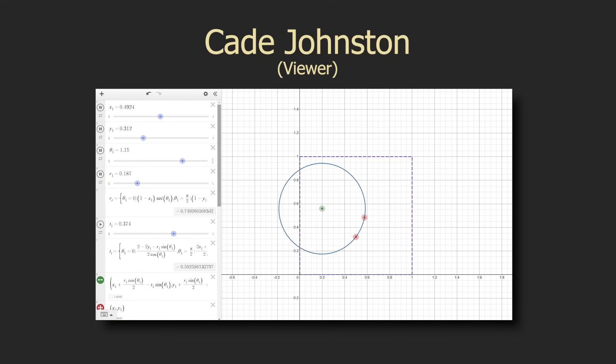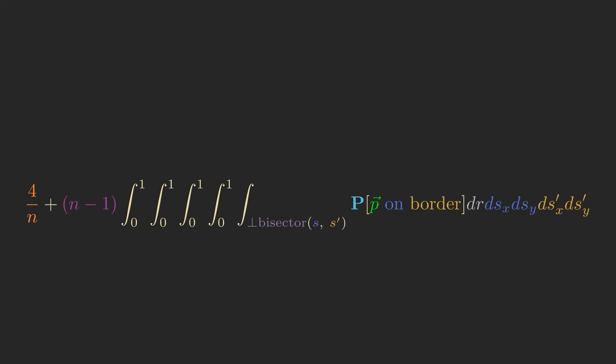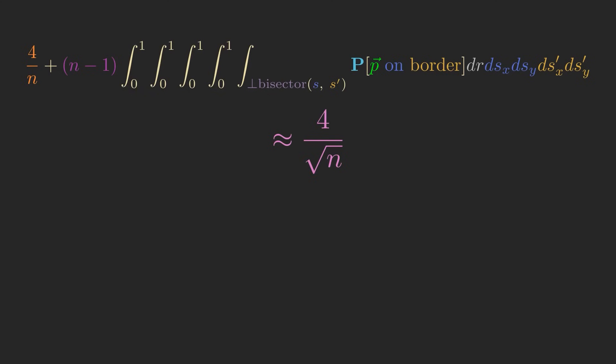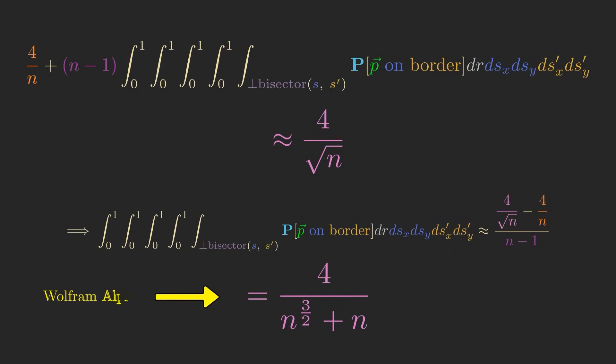One really neat thing I realized though, is that despite this integral being very difficult to directly solve, if we accept our earlier approximation of 4 over square root of n for the answer to the perimeter question, then we can do some algebra to show that the integral is very well approximated by the formula 4 over n to the 3 halves plus n.